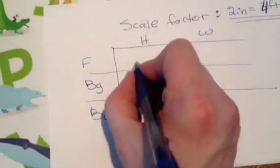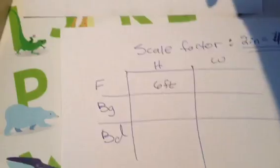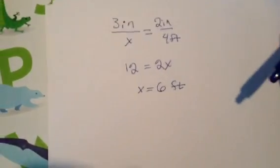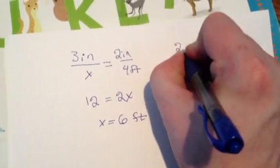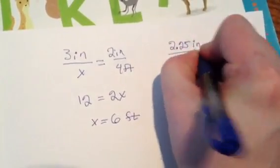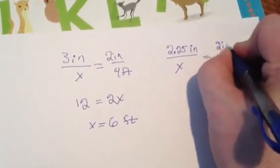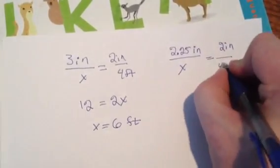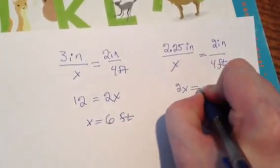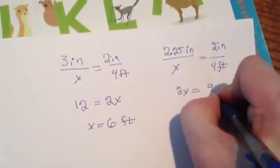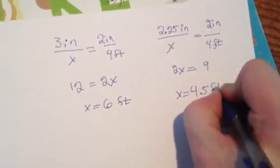Divide, I have X is equal to six, six feet. That means in the real world my foreground piece would be six feet tall. And then I can repeat that process for my other measurements. For example, I would do 2.25 inches is to X as two inches is to four feet. Cross multiply, so two X is equal to nine. I get X is equal to 4.5 feet.